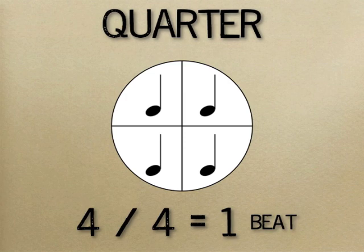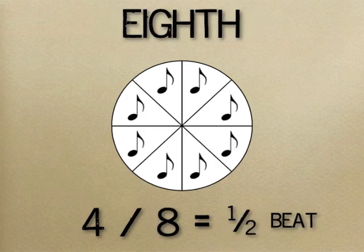If we divide the quarter notes into halves, they get half of a beat. But these notes are called eighth notes, because they are one eighth of the value of the whole note.